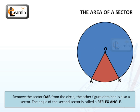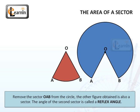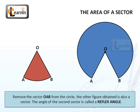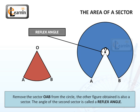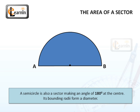Remove the sector AOB from the circle. The other figure obtained is also a sector. The angle of the second sector is the reflex angle. A semicircle is also a sector if a circle is making an angle of 180 degrees at the center. Its bounding radii form a diameter.